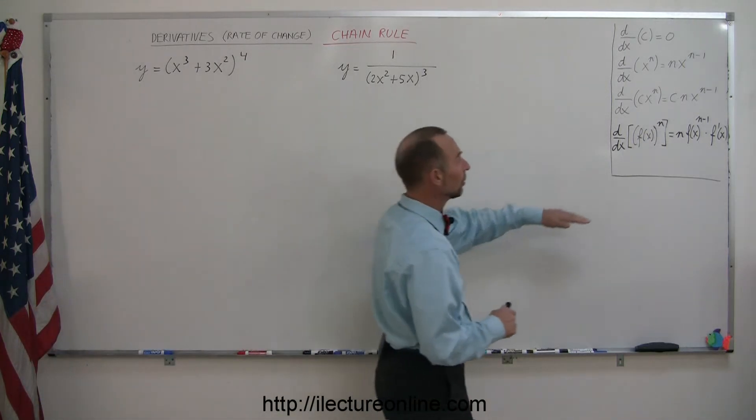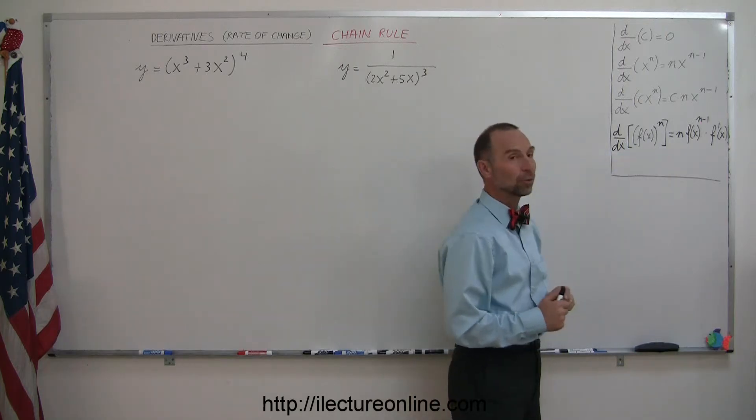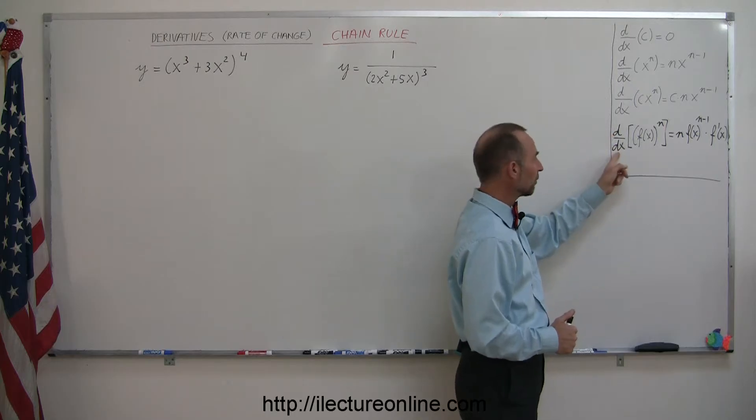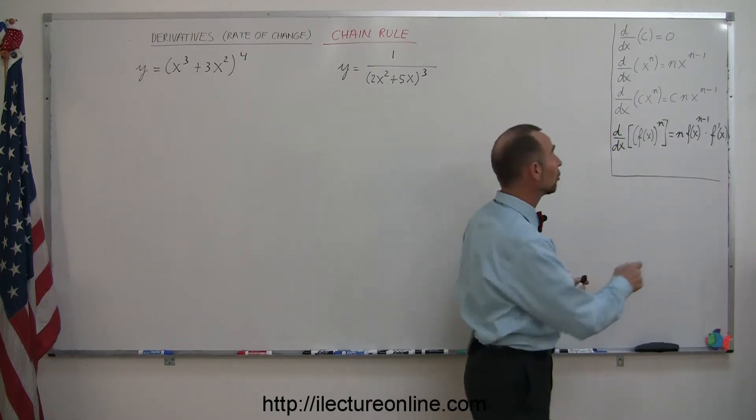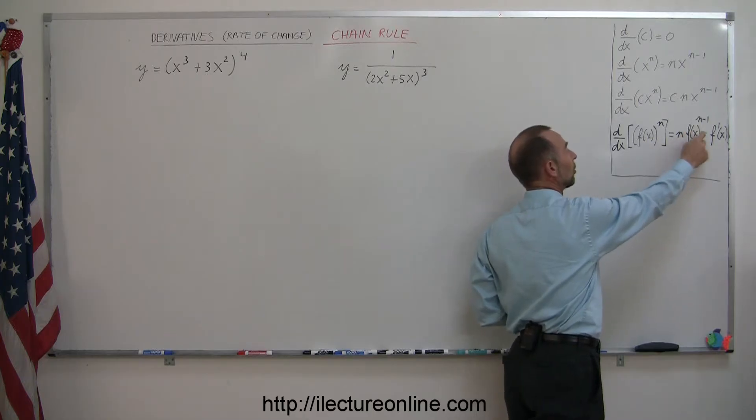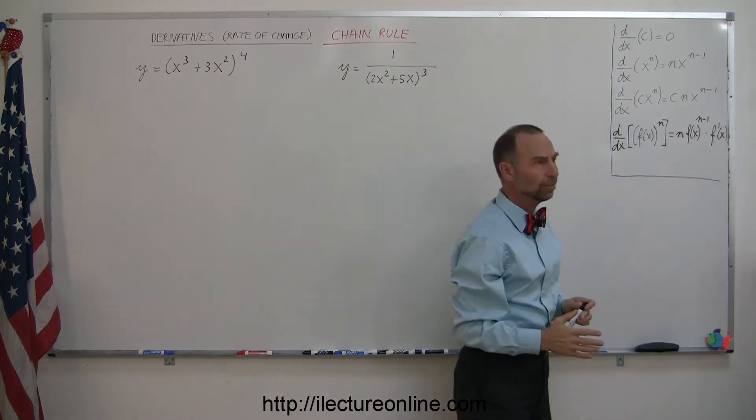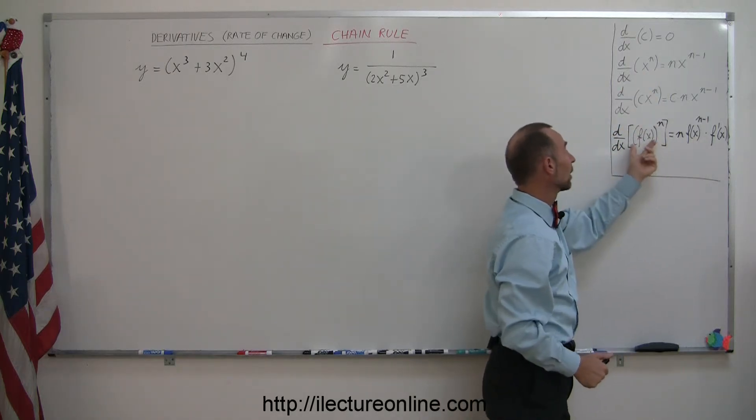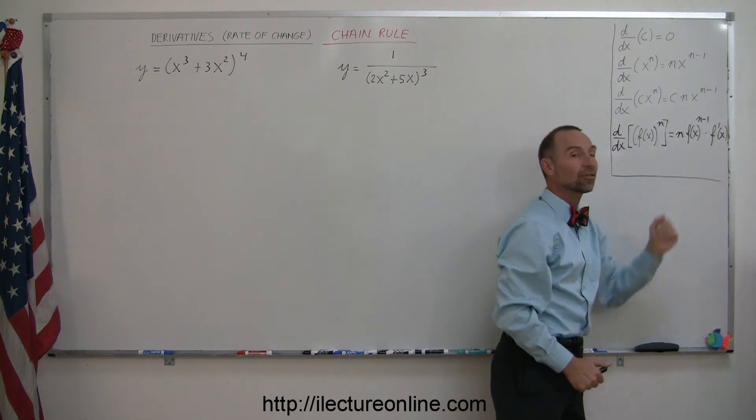And here's the general formula of how you apply the chain rule. So let's say you have a function of x that is raised to some exponent, and you want to take the derivative of that. So what you do then is you take the exponent, put it in front, multiply it times the function raised to the exponent minus 1. That kind of looks familiar, like the ones we have up there. But then you have to multiply that times the derivative of the function inside.